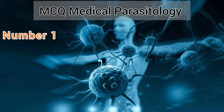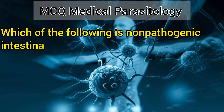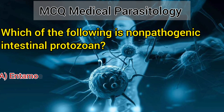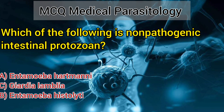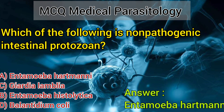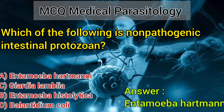Number 1. Which of the following is non-pathogenic intestinal protozoan? A. Entamoeba hartmanni. B. Entamoeba histolytica. C. Giardia lamblia. D. Balantidium coli. Answer: Entamoeba hartmanni.